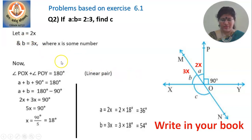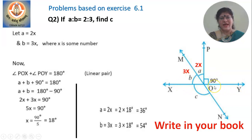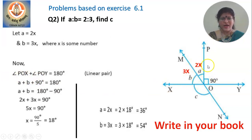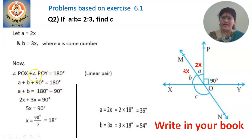The next step will be: angle POX plus angle POY equal to 180 degrees, because they are angles in a linear pair. Now, angle POX is the addition of these two angles, so POX is A plus B. So you get A plus B plus 90 degrees, because angle POY is 90 degrees, and the total is 180 degrees.